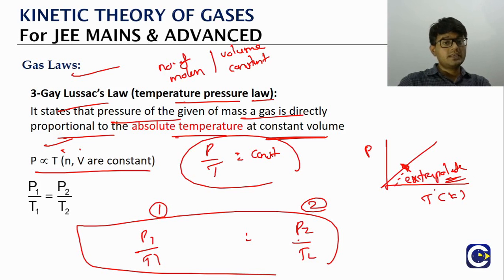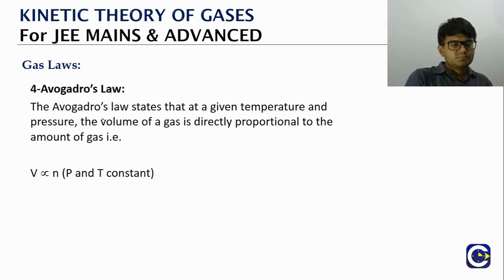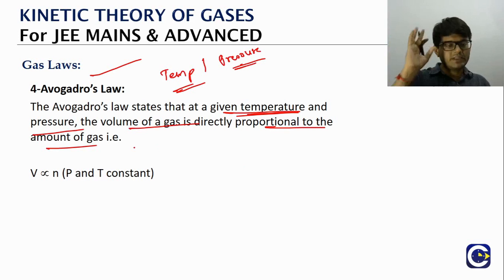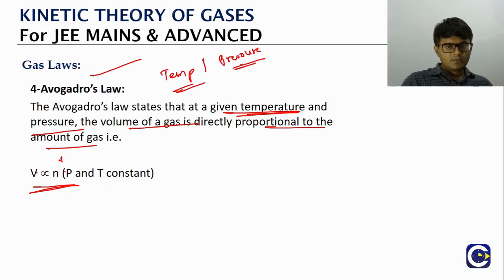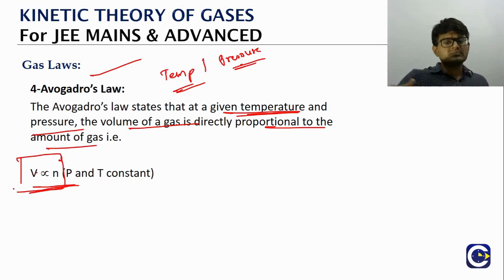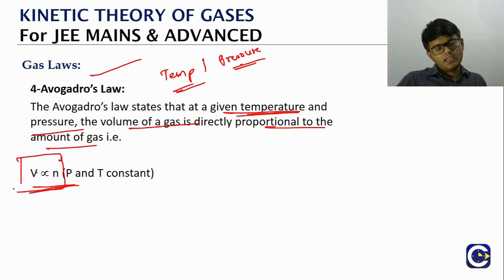The fourth law is Avogadro's law. At fixed temperature and pressure, the volume of a gas is directly proportional to the amount (number of moles) of gas: V ∝ n. So two moles of a gas will occupy twice the volume of one mole. Volume is simply proportional to number of moles.